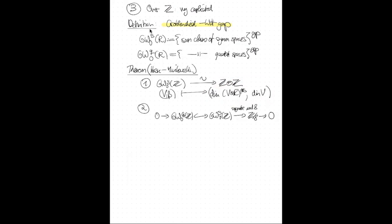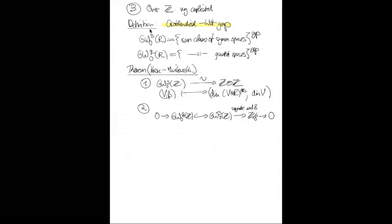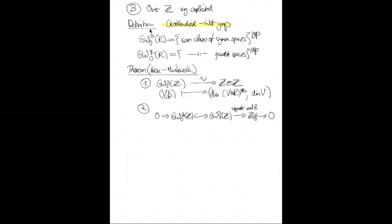That was a recap of what is known classically about quadratic and symmetric spaces over ℤ — a complete classification of GW₀, which we then group-complete as in K-theory. But this is only about isomorphism classes. Similar to K-theory, we want to know something about morphisms of symmetric or quadratic spaces, or equivalently about higher homotopy groups, and for that people like Karoubi have introduced the Grothendieck-Witt spectra.